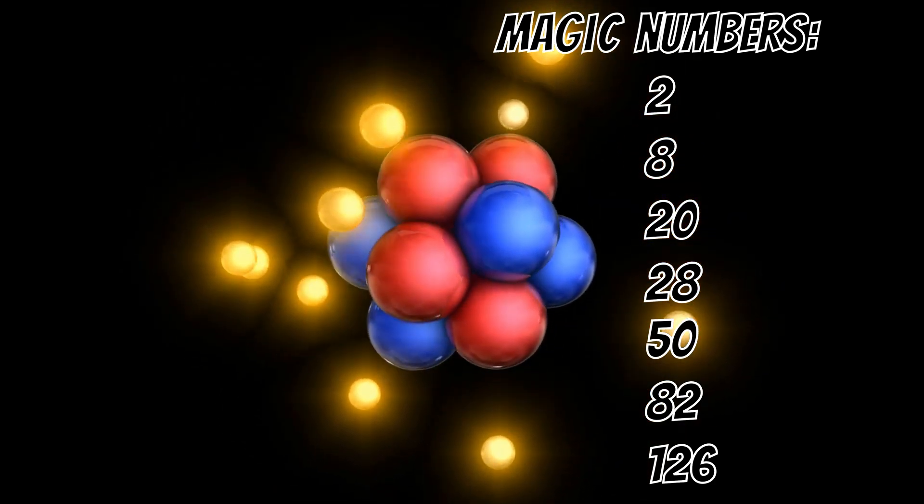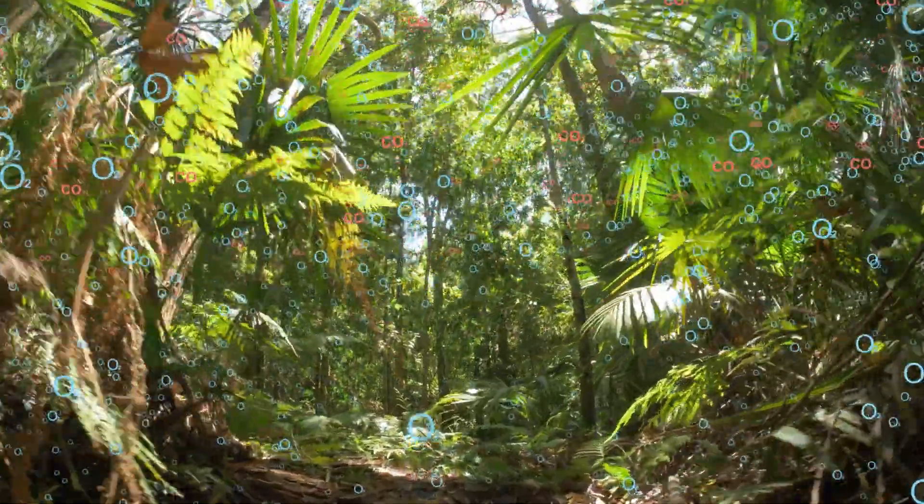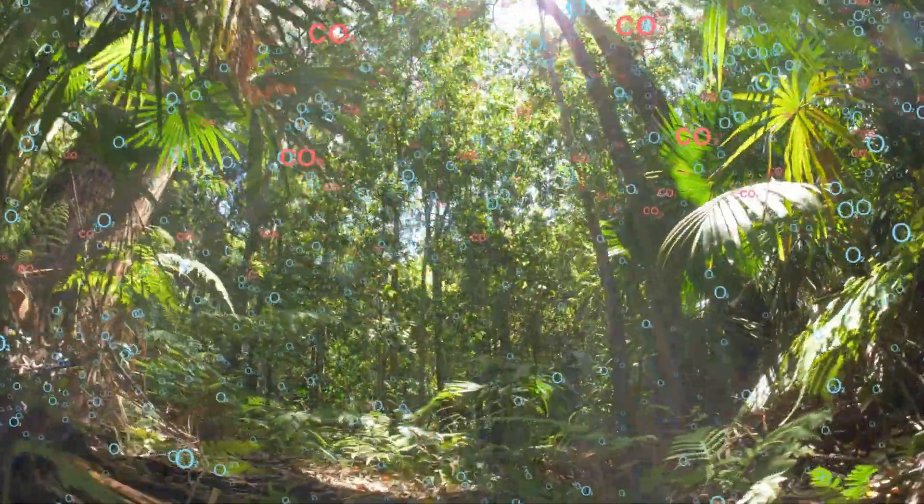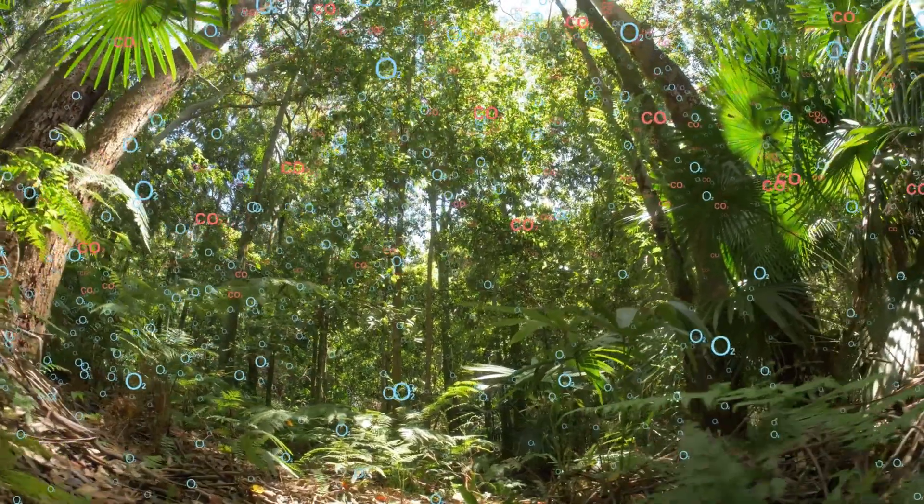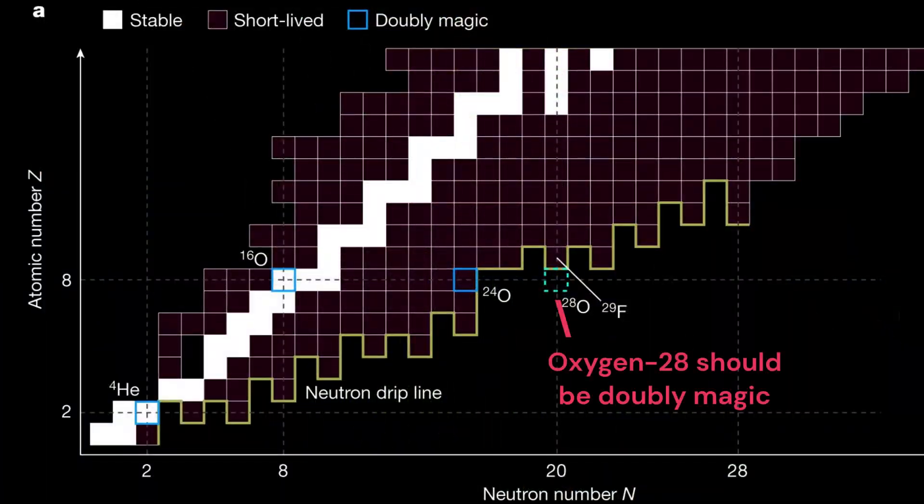Oxygen-16, the common oxygen we are all breathing, comes with a balanced 8 neutrons and 8 protons, so it is doubly magic and indeed very stable. Based on the magic number rule, the next doubly magic one should be Oxygen-28 with 8 protons and 20 neutrons, but it has never been found.